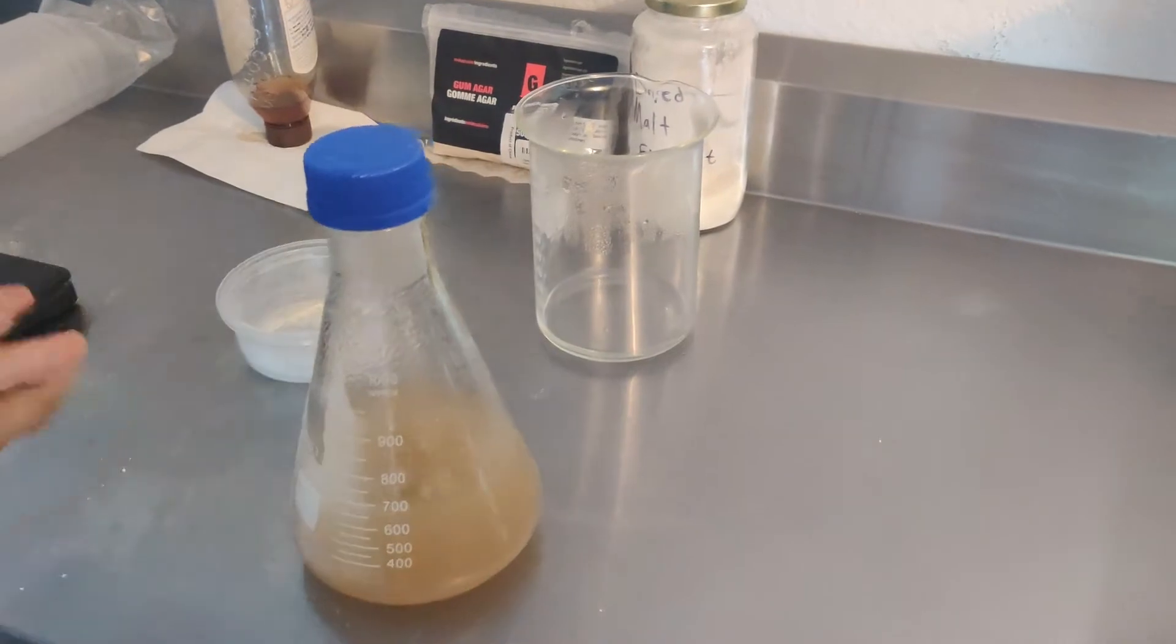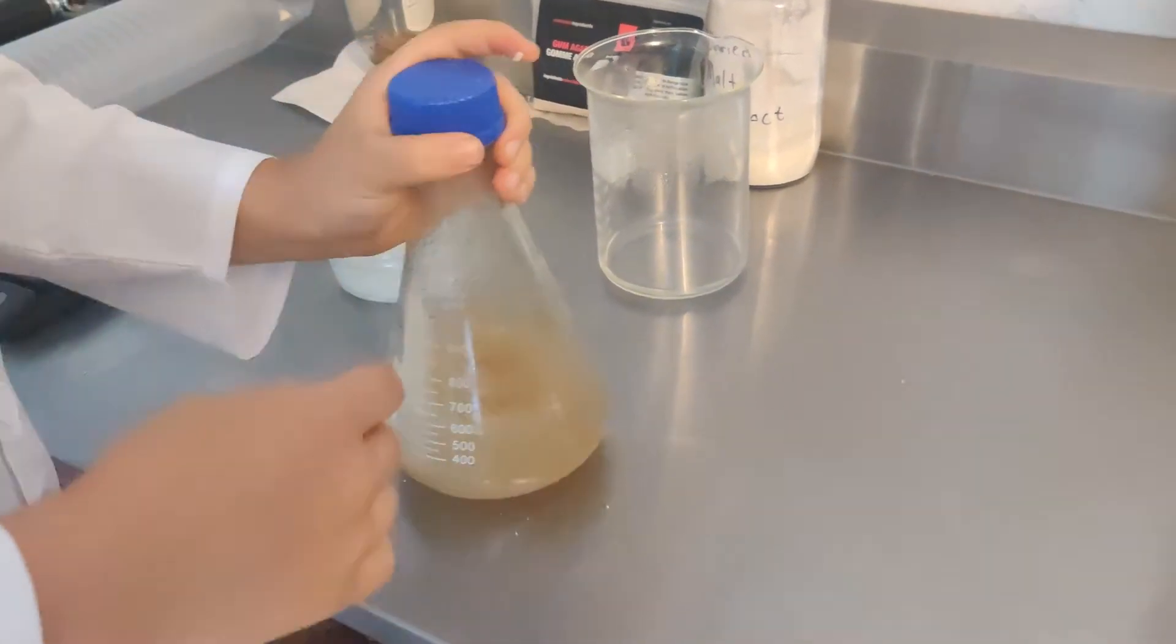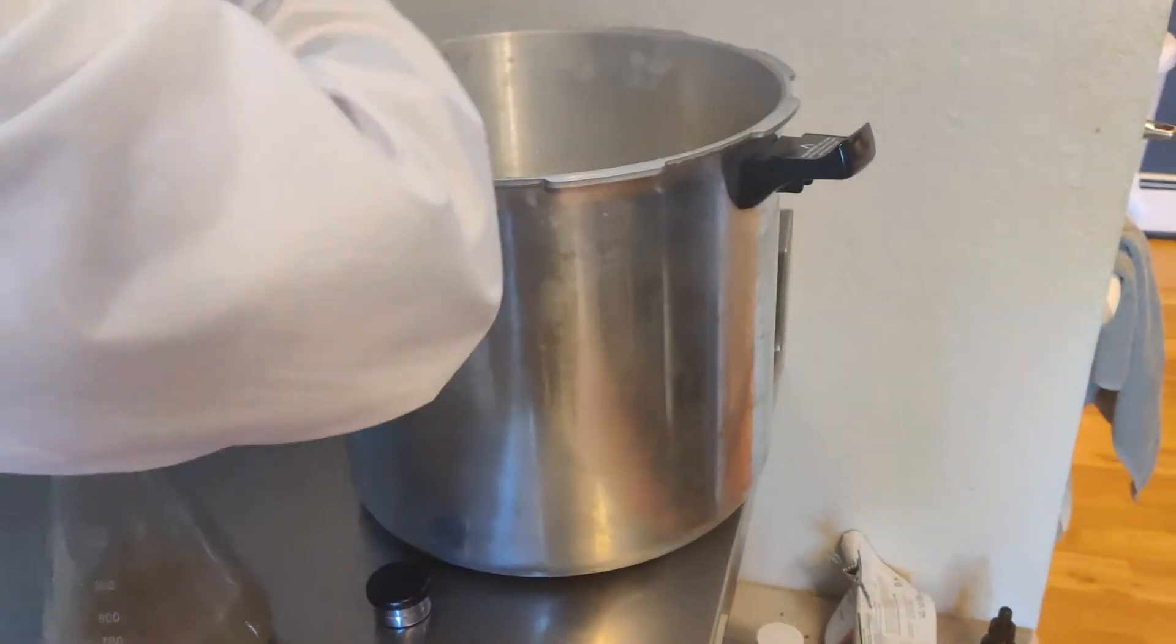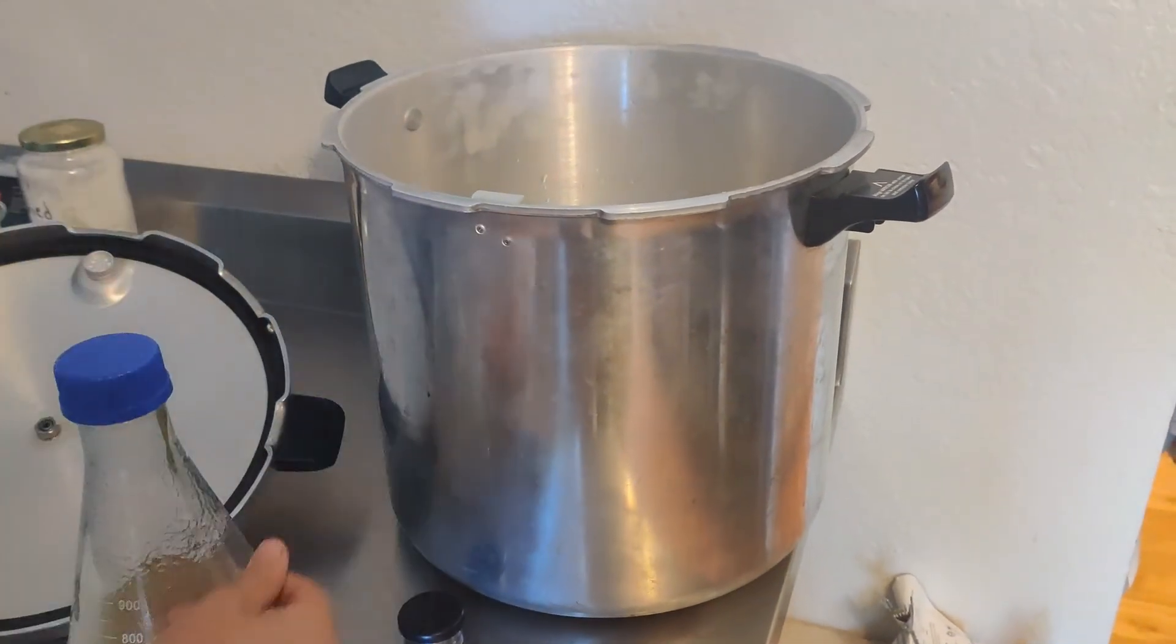Once that's good and dissolved, you can place it in your pressure cooker and pressure cook it for 30 minutes at 15 psi.